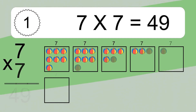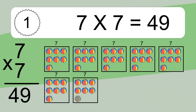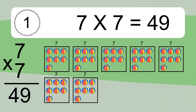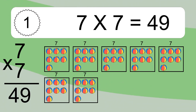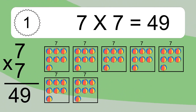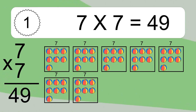7 times 7 equals 49. We have 7 boxes, and each box has 7 colorful balls inside. If you count all the balls in all the boxes together, you will have 7 times 7 balls. This equals 49 balls.